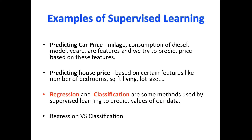Another example of supervised learning is predicting house price. A house price depends on features like number of bedrooms, square feet living, lot size, location of the house, whether the house has a basement or not, number of bathrooms and so on.